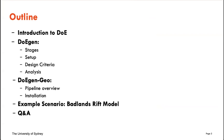The brief outline of today's seminar: I'll start with a brief introduction to Design of Experiment, referred to as DoE, covering design principles, some history, and what it is. Then I'll introduce the package we built, DoEgen, covering certain setup analyzer steps and stages of the experiment design. Then Henry will take over and talk about the customized badlands pipeline, DoEgen-Geo, covering installation, pipeline overview, and walk through a scenario on the example of the badlands rift model.